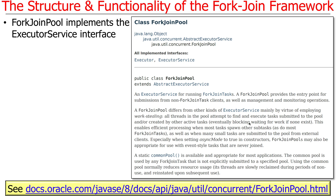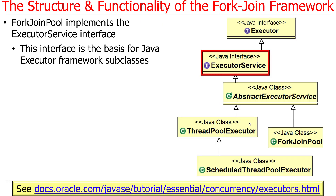The class ForkJoinPool is a public-facing Java class that implements the ExecutorService interface. You can see that ForkJoinPool implements the ExecutorService interface. Under the hood it actually does a few other things, but we'll talk about that in a second. This interface, the ExecutorService interface, is the basis for all the different subclasses in the Java Executor framework.